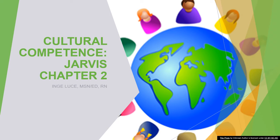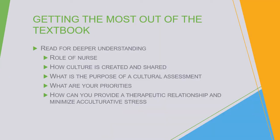Chapter 2 in the Jarvis book talks about cultural competence, and really it's exploring the importance of the nurse understanding the cultural needs, spiritual needs, and just the personal needs of each individual that you're caring for. To get the most out of this chapter from your textbook, I just want you to read for a deeper understanding of the role of the nurse when caring for people of different cultures.